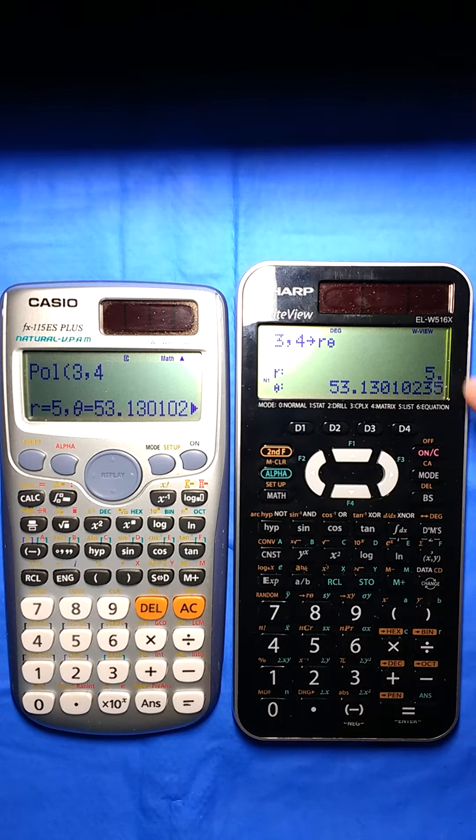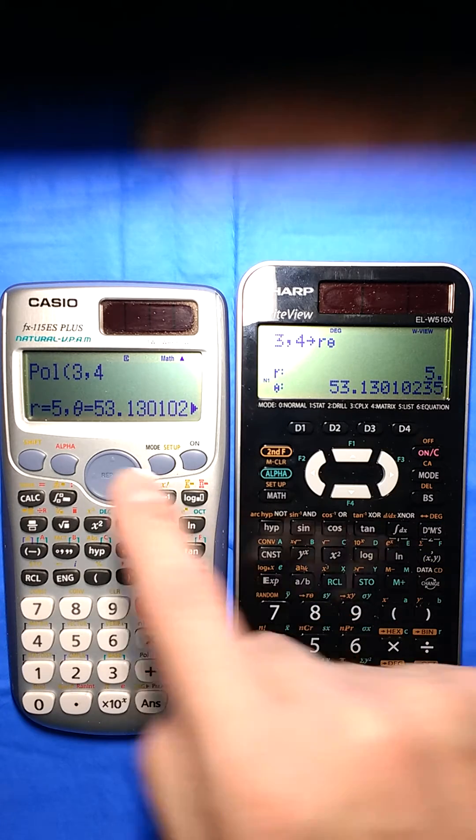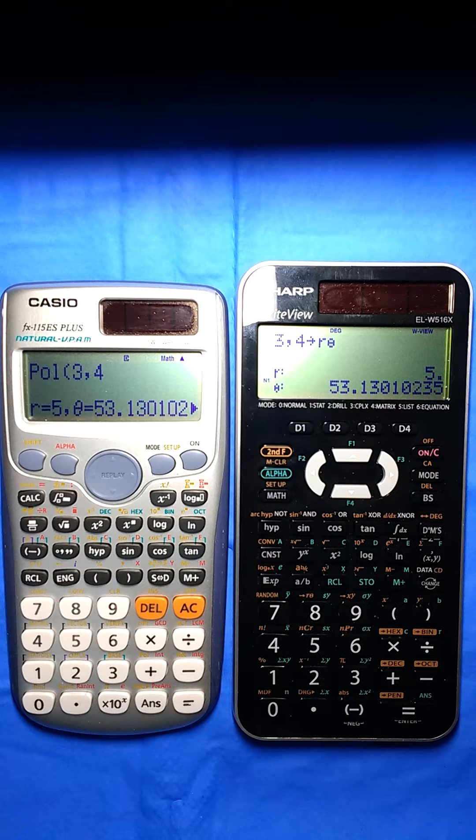It's interesting to note it puts it on two lines. The Sharp does that a lot, whereas the Casio tends to put things on a single line. I'm sure there are pros and cons of that. You can be the judge.